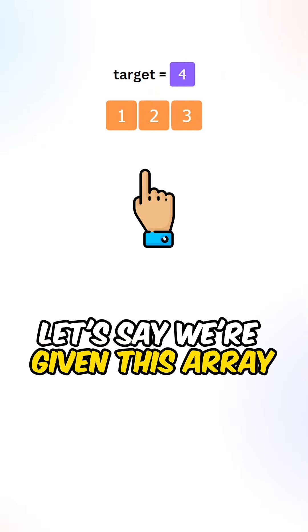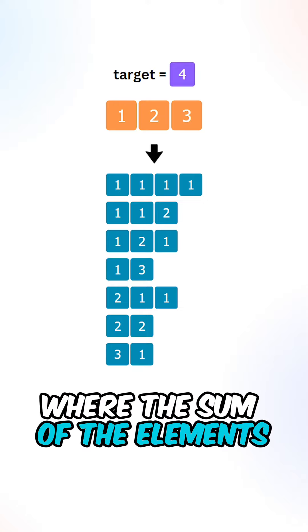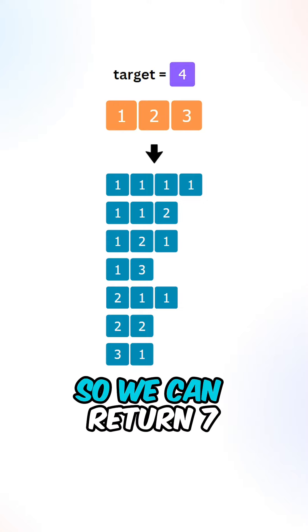Let's say we're given this array with target equal to 4. We have 7 possible combinations where the sum of the elements is equal to 4, so we can return 7.